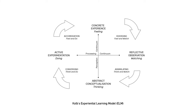Kolb's experiential learning model is a learning approach about engaging life experiences with a learning attitude. Concrete experience involves doing or having a new experience or reinterpreting an existing one. Reflective observation involves stepping back and reviewing what has been done and experienced. Abstract conceptualization is the process of making sense of what happened, interpreting events and understanding relationships, giving rise to new ideas or modifications of existing concepts. Active experimentation involves using theories to solve problems and make decisions, applying ideas to the world to see what happens.